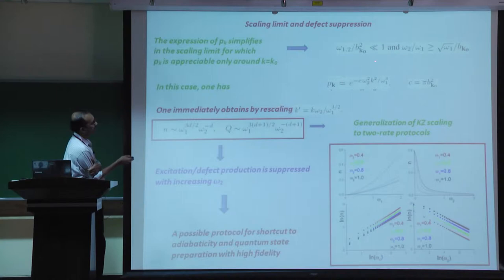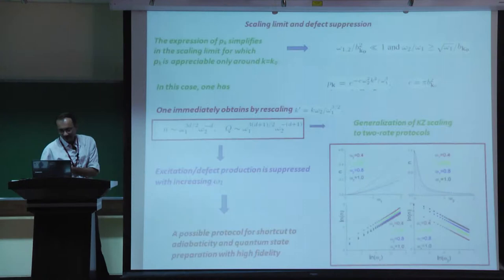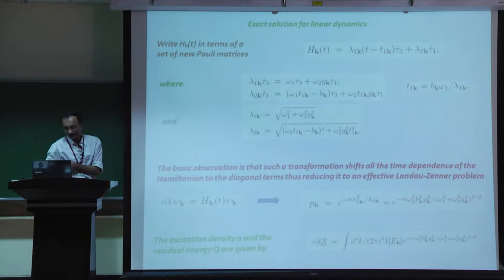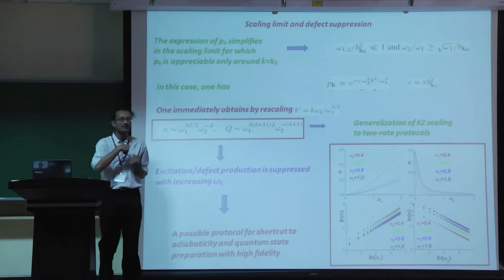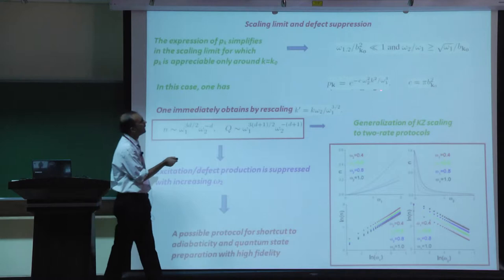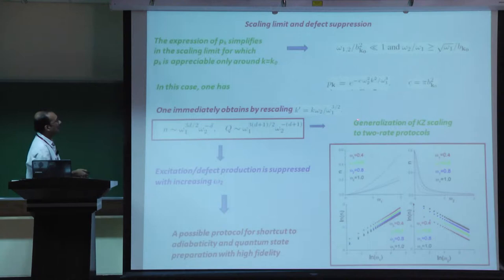In the scaling regime, when each drive rate divided by b_{k_0}^2 is less than 1 and omega_2/omega_1 is large compared to sqrt(omega_1/b_{k_0}), the expression simplifies considerably. One can write P(k) ~ C * omega_2^2 * k^2 / omega_1^3. Performing the momentum integral, n scales as omega_1^(3d/2) * omega_2^(-d). Thus the first key result: the larger you drive the off-diagonal term, the fewer defects are produced.